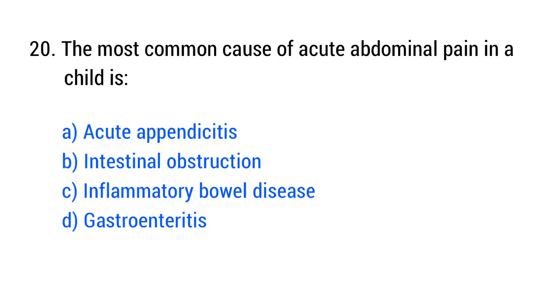Question number 20. The most common cause of acute abdominal pain in a child is? The right answer is option A: Acute appendicitis.